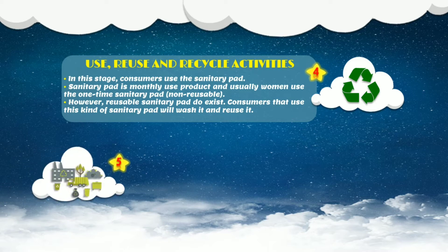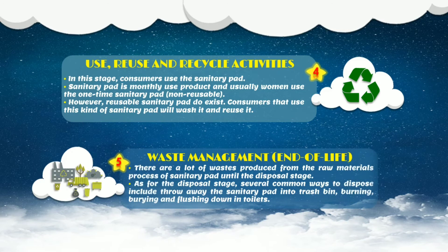As for the last stage of the life cycle of sanitary pad, it involves waste management, also known as the end-of-life stage. In this stage, there are a lot of wastes produced from the raw materials process of sanitary pad until the disposal stage. Several common ways to dispose include throwing the sanitary pad into the trash bin, burning, burying, and flushing down in toilets.